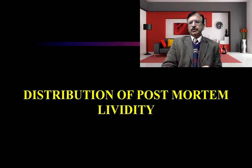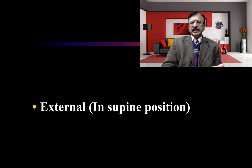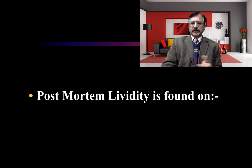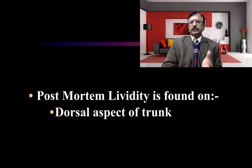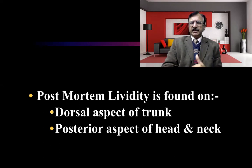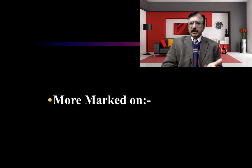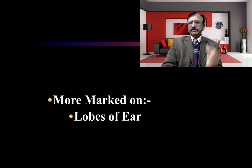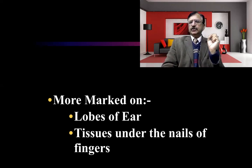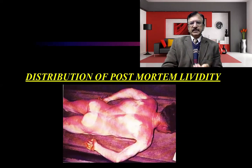Looking at the detailed distribution of post-mortem lividity: externally, when the body is in supine position, lividity will be found on the dorsal aspect of the trunk, posterior aspect of the head and neck, and dependent areas of the upper and lower limbs. It is also more marked on the ear lobes and the tissues under the fingernails, as these areas easily manifest post-mortem staining when dependent.